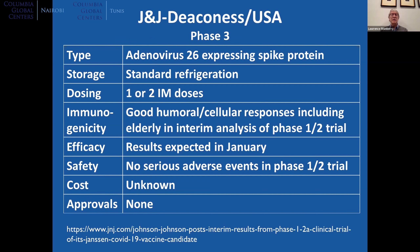The Johnson & Johnson Janssen vaccine, produced in the United States, uses the adenovirus-26 vector and expresses the spike protein, with standard refrigeration. Initial trials have used a single dose, with studies now expanding to examine two doses as well. It shows good immune responses, including in the elderly. Final results are expected next month, with no serious adverse events reported so far. If it proves highly efficacious as a single dose with standard refrigeration, this could be a very favored vaccine due to its convenience.